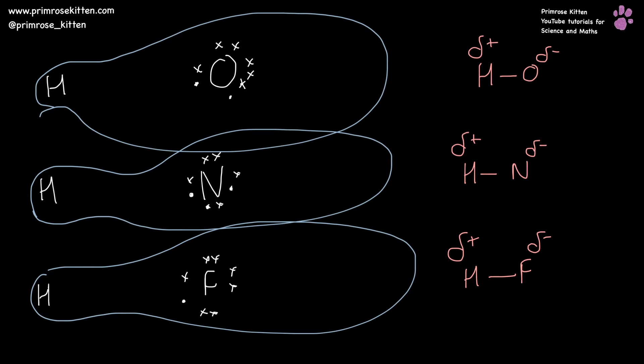So the hydrogen bond is a strong, permanent dipole. And it's a strong, permanent dipole that only occurs when hydrogen is bonded to oxygen, hydrogen is bonded to nitrogen, or hydrogen is bonded to fluorine.